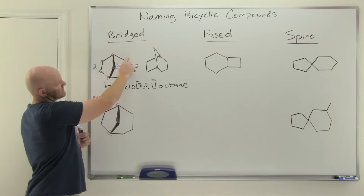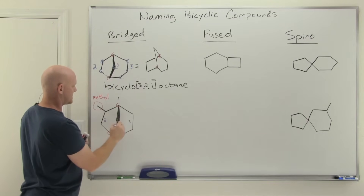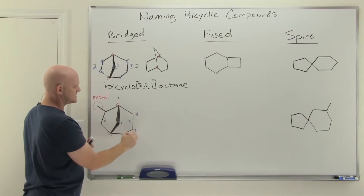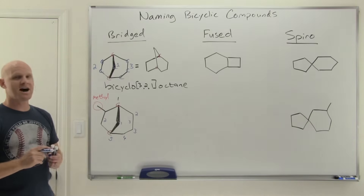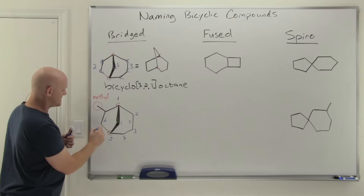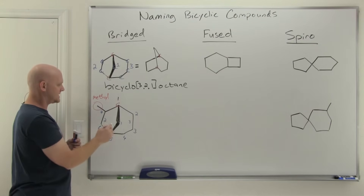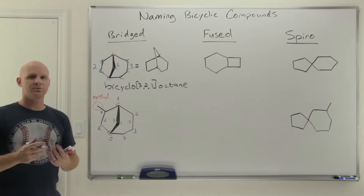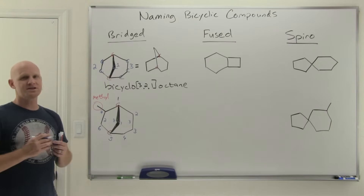Here the longest chain was three, then two, then one. So starting at bridgehead number one, we number through: two, three, four, and the other bridgehead is five. Then through the second longest ring: six and seven. Then any remaining carbons get the next number: eight. In this case the methyl group is attached to carbon number seven.